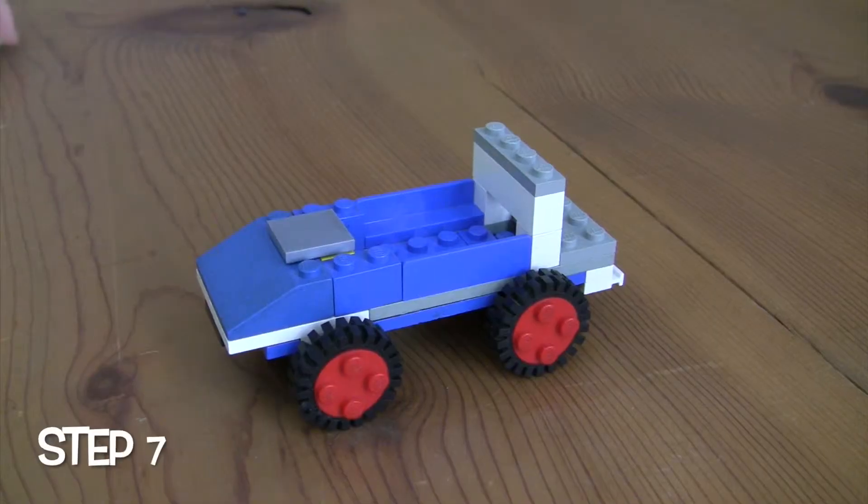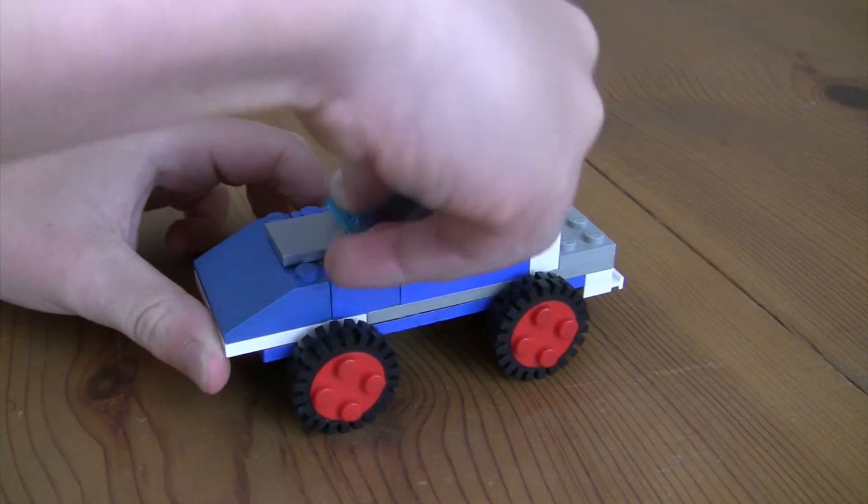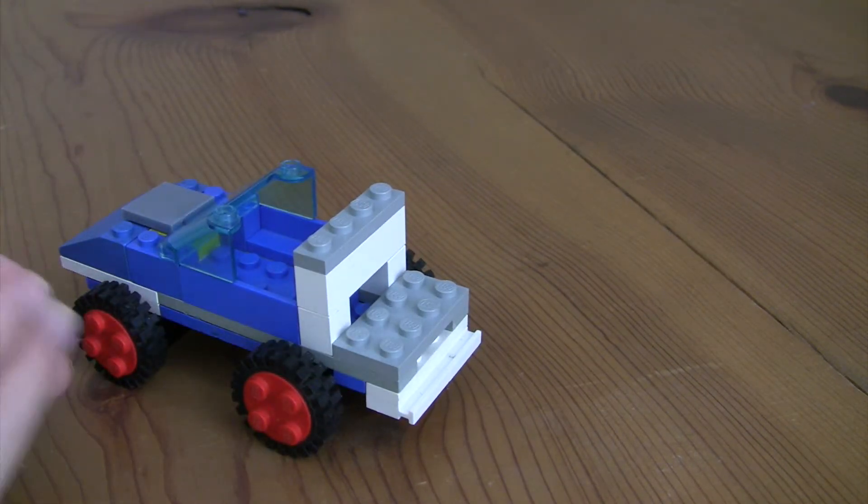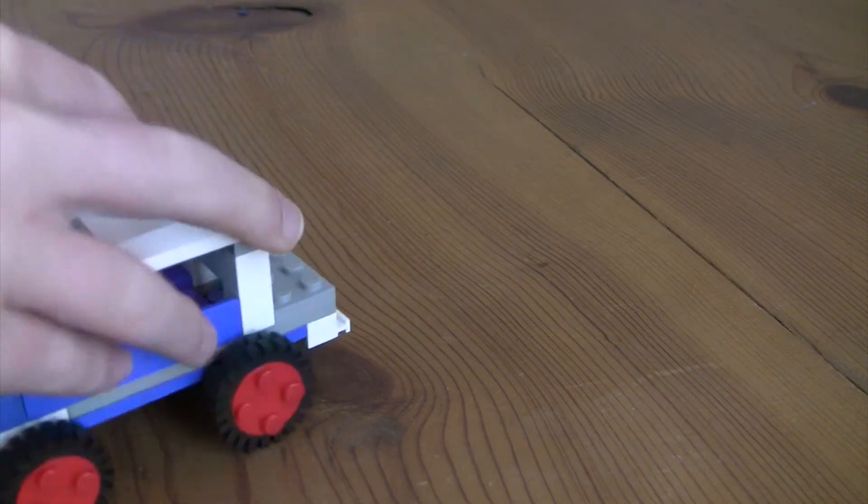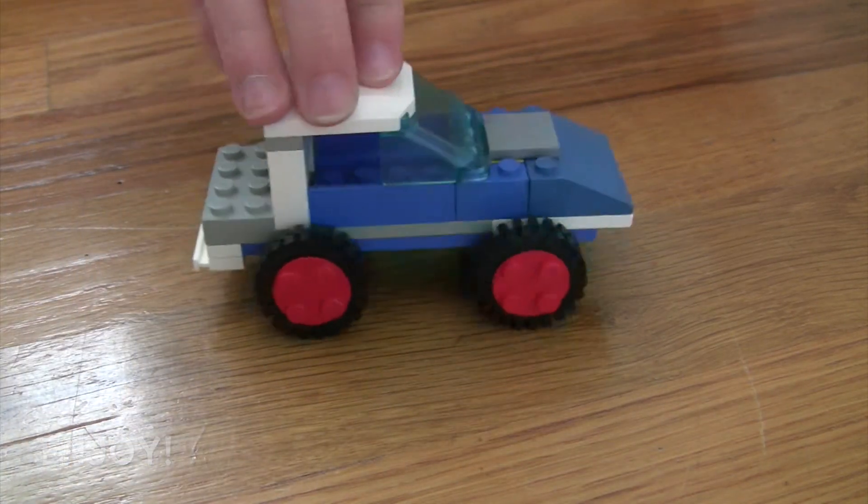Okay, so to finish off your card, you're going to need a windshield and just place it right there. And then take your roof, nothing special. Get this an Indy card set. And then just snap it on the top. And there you go, there is your little blue truck.